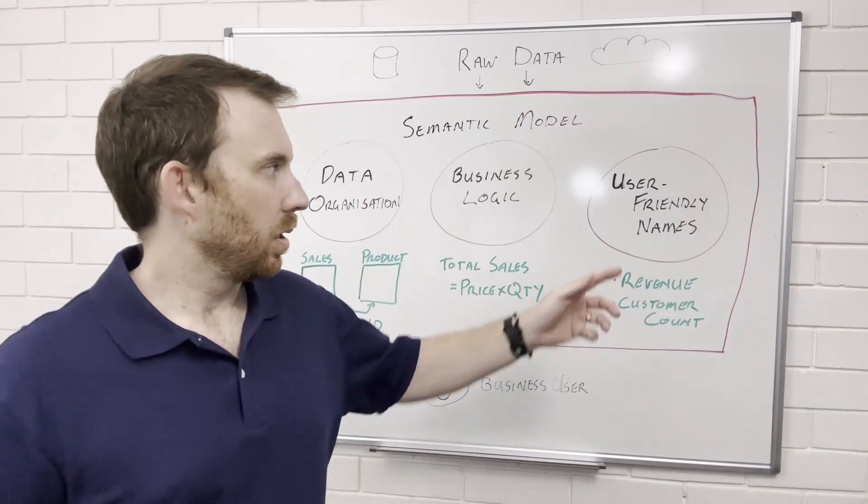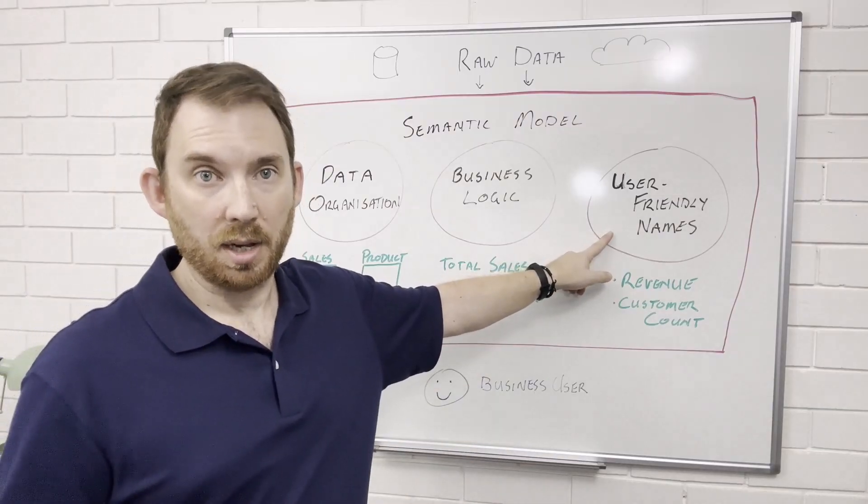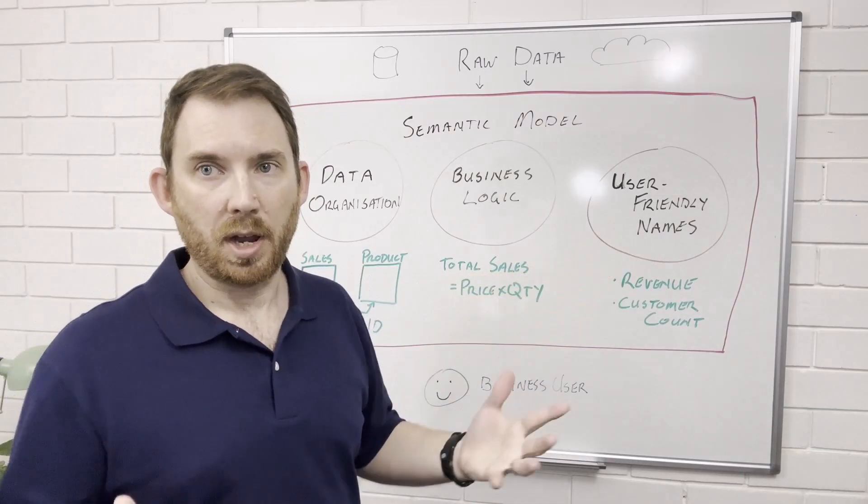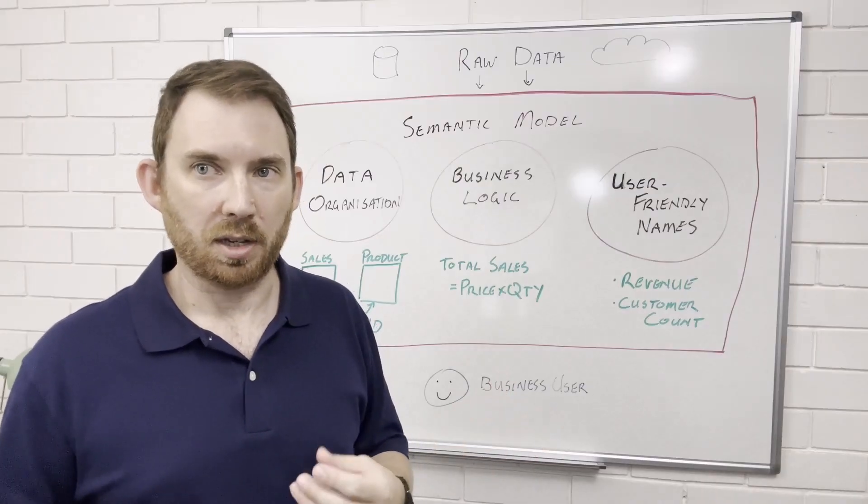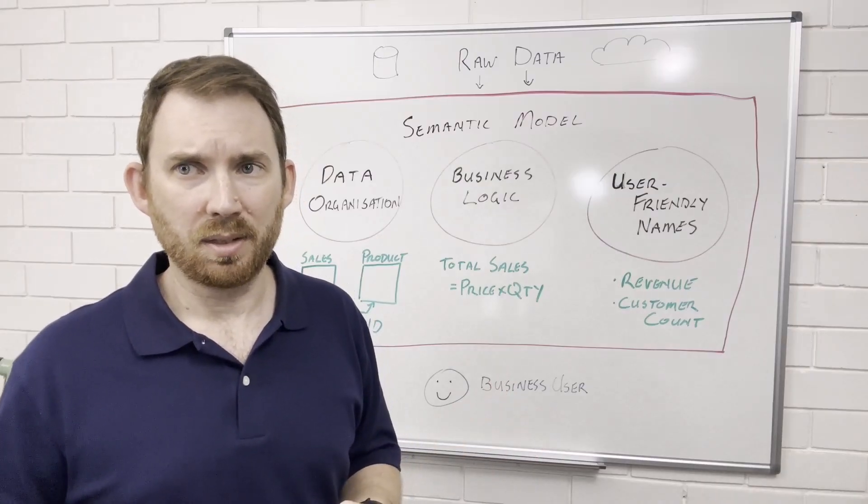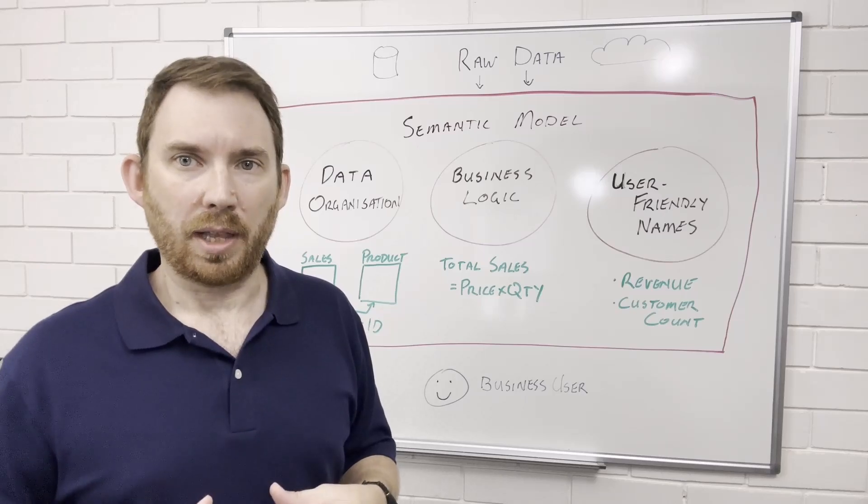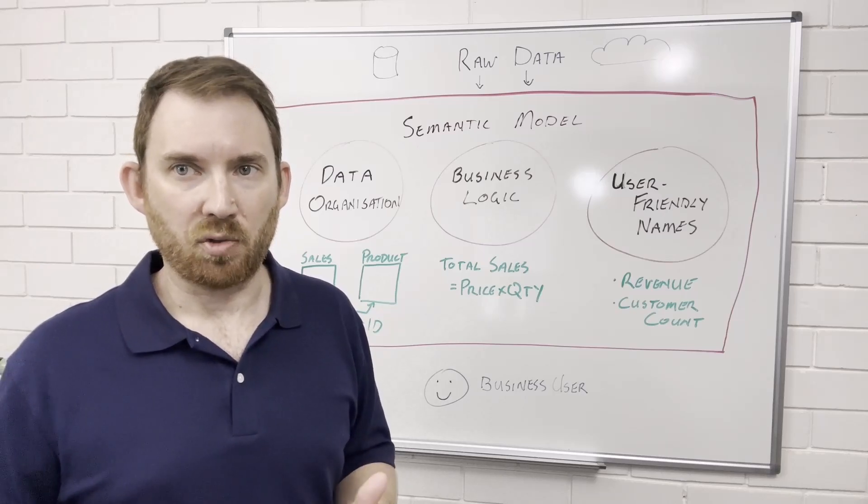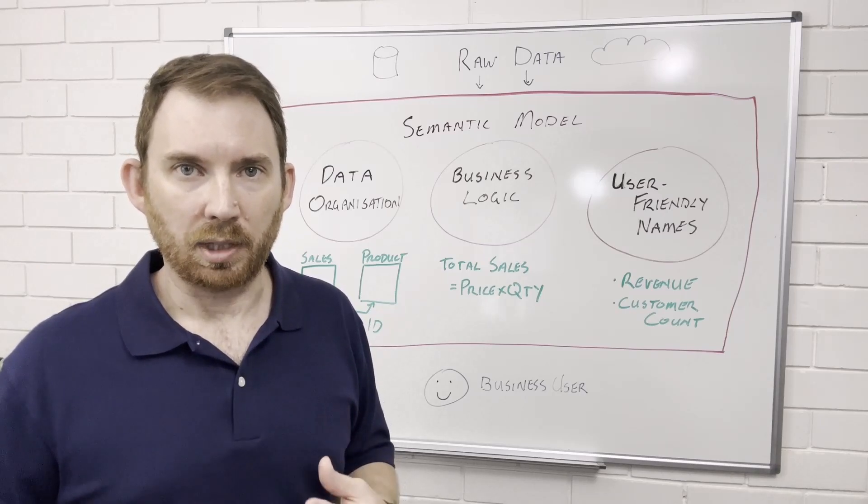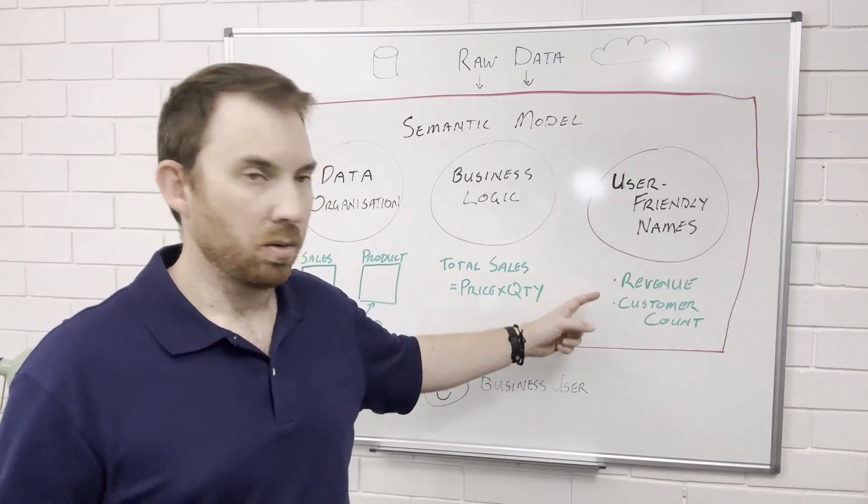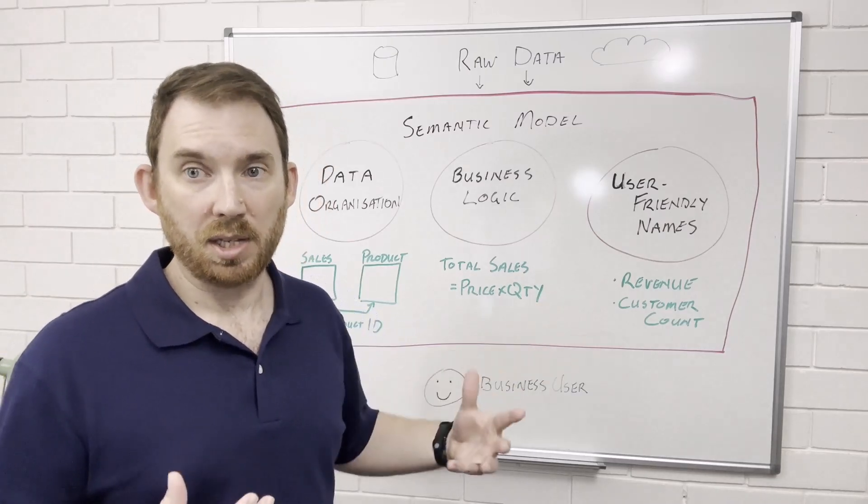Next we have user-friendly names in our semantic model. Forget cryptic database terms like col123. Semantic models allow you to rename columns and metrics into business-friendly language like revenue or customer count, so it's easy to understand.